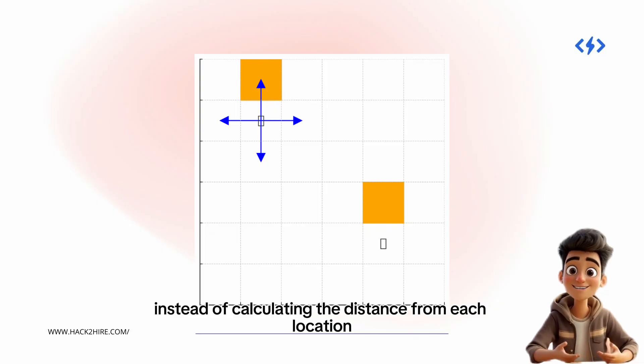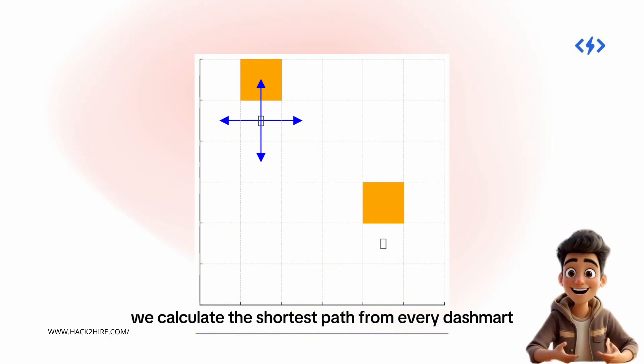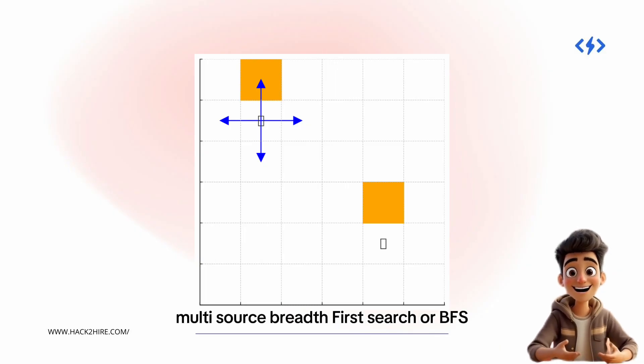Instead of calculating the distance from each location, which would be slow, we flip the problem. We calculate the shortest path from every dashmart using a powerful algorithm: Multisource Breadth-First Search, or BFS.